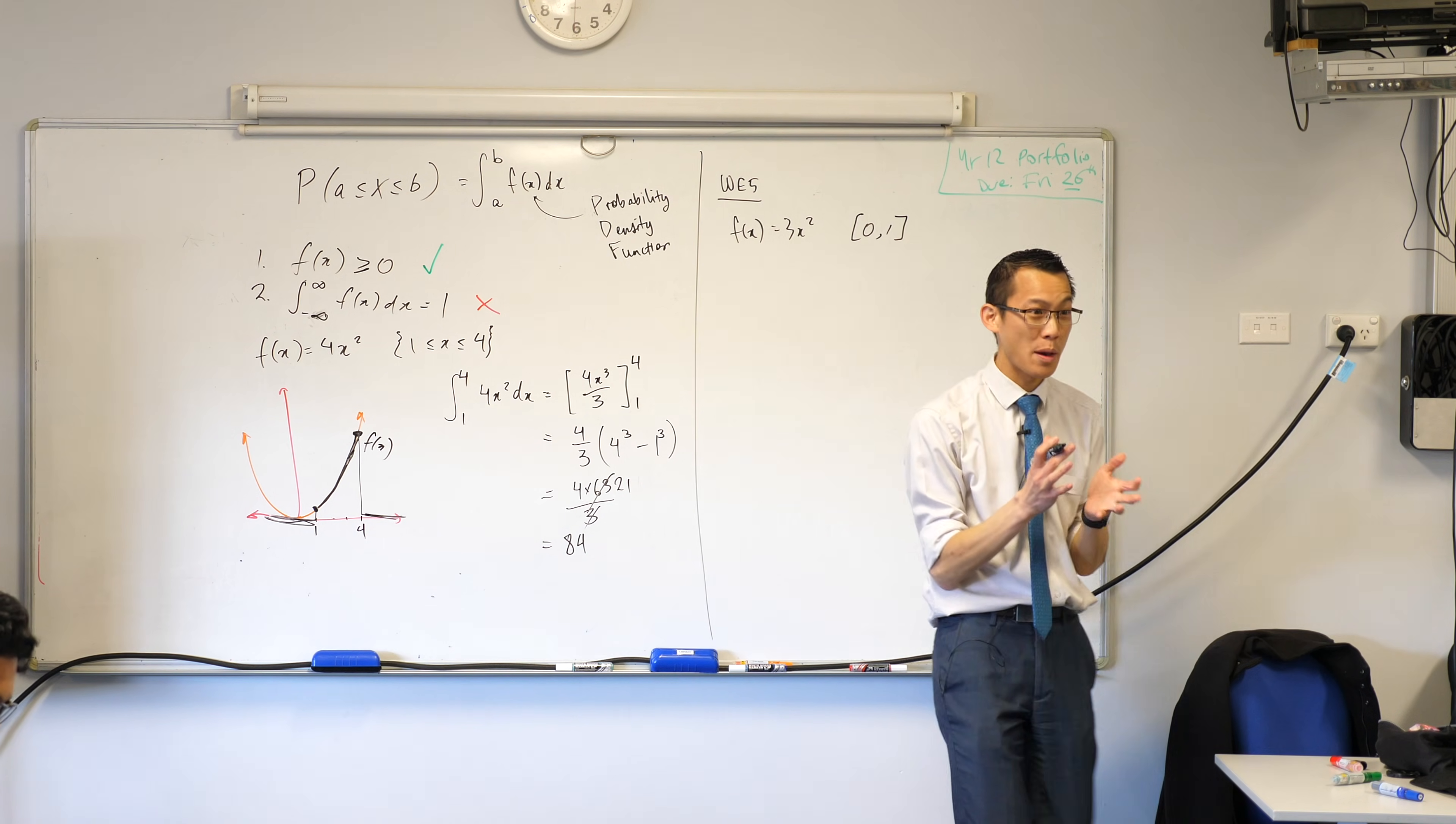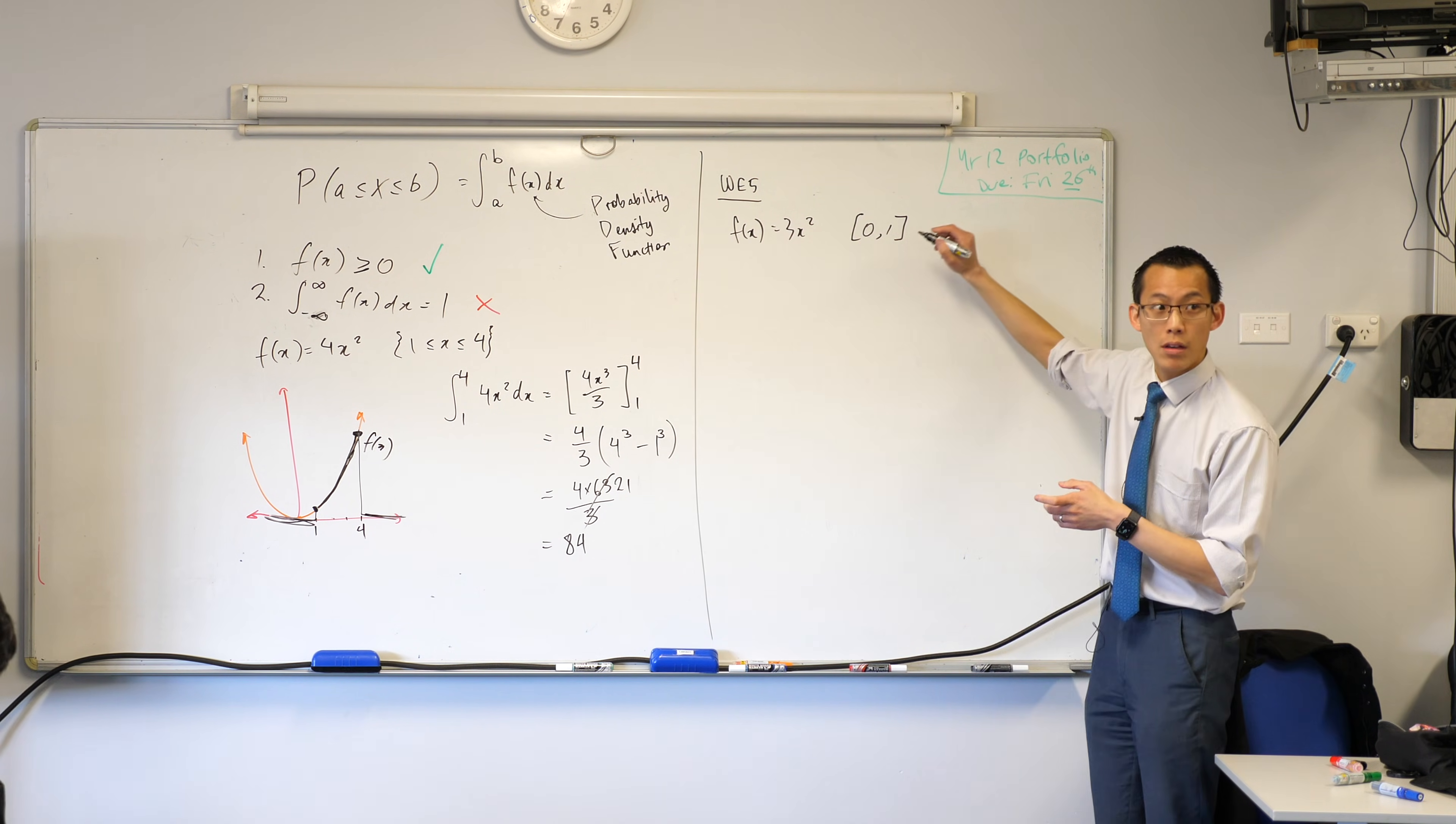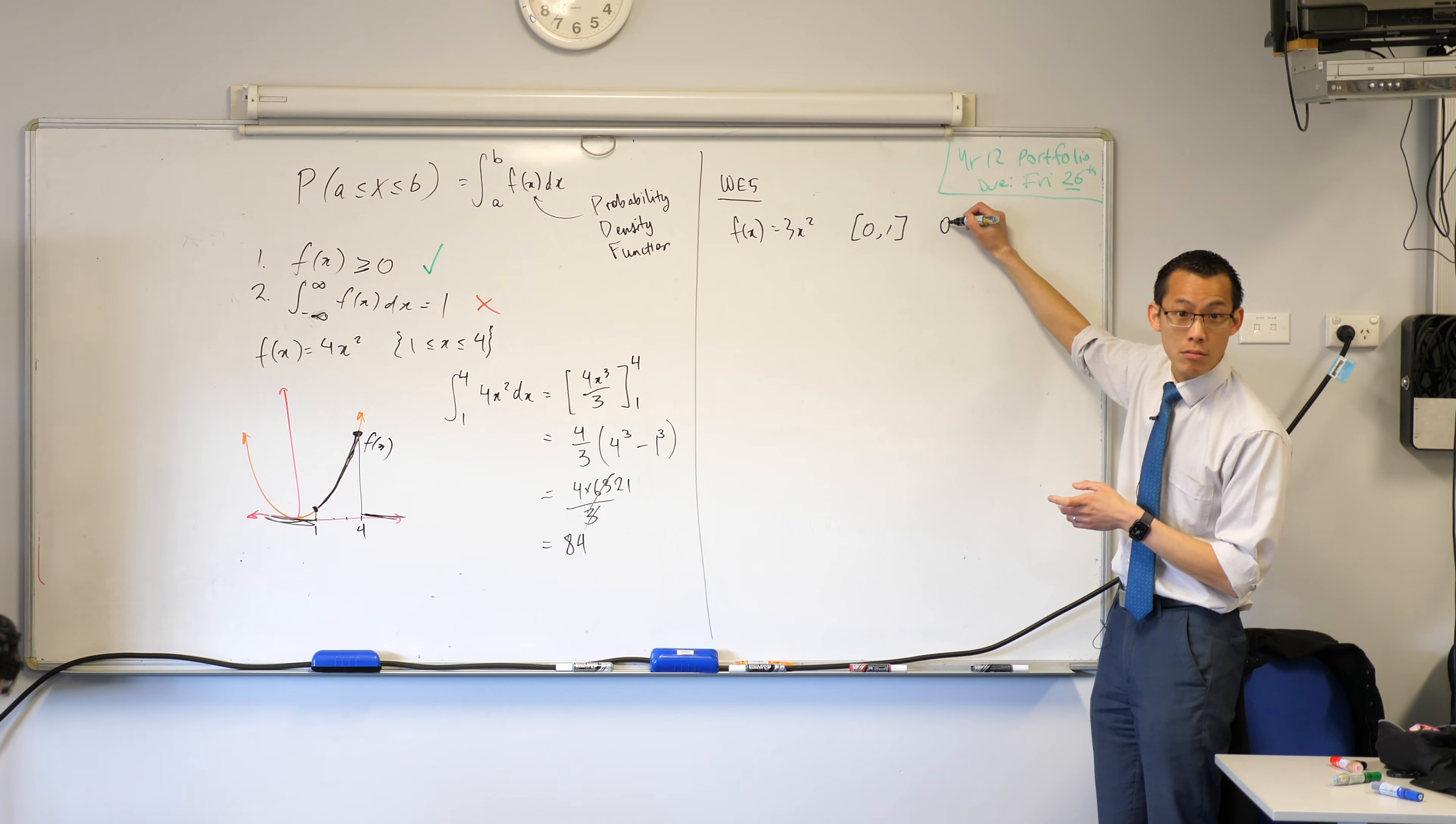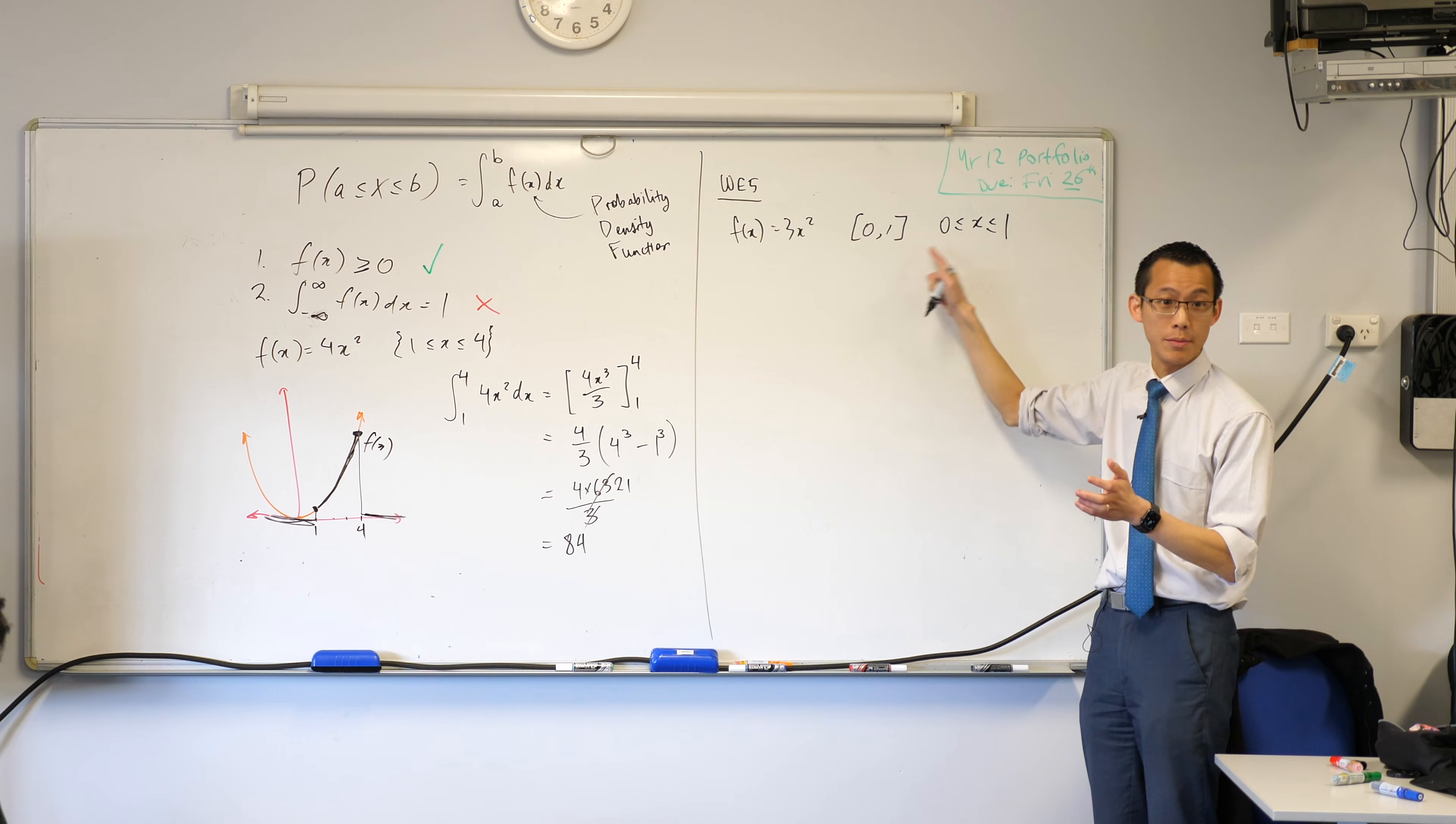How would you translate that? You've got to be able to read both but how would you write this with inequalities? From zero is less than or equal to x which is less than or equal to 1. So these are equivalent.